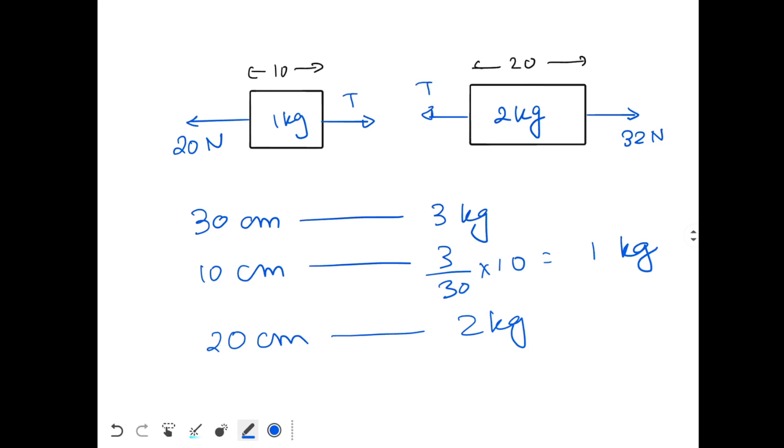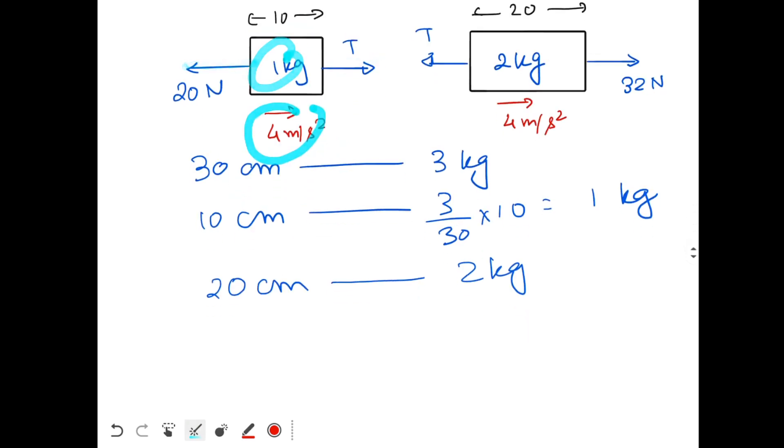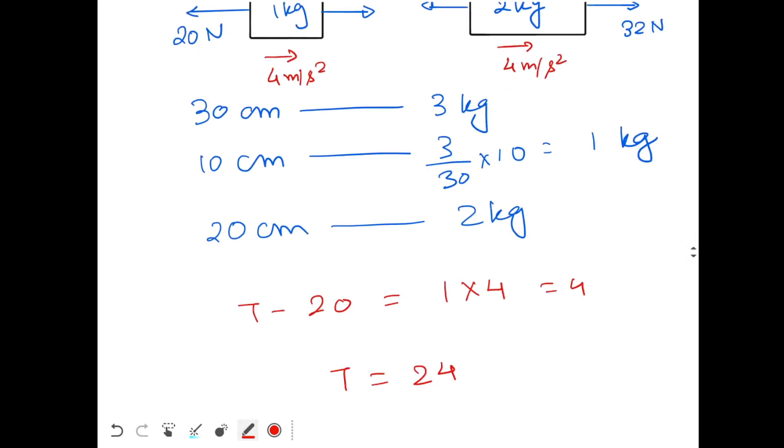That's very easy. Both of the blocks will have same acceleration as the total block, so the acceleration will be 4 m per second squared. We can write the equation for any of the blocks. Let's take the 1 kg block. T minus 20 should be mass into acceleration. So T minus 20 should be equal to 1 times 4, that is 4. So the tension will be 24 N. This is the answer.